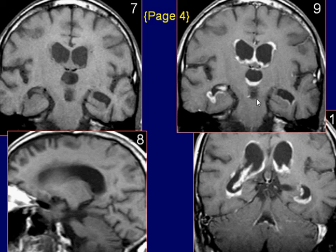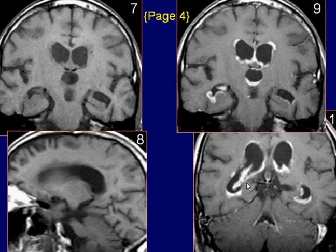Coronal post-GAD T1-weighted images demonstrate extensive nodular ependymal enhancement in the lateral as well as third and fourth ventricles.